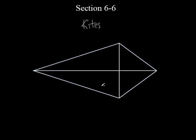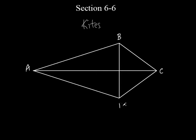Let's talk about what is true about a kite. Let's label it so we can work with it. We'll label the vertices A, B, C, D, and we'll call this middle intersection point E.